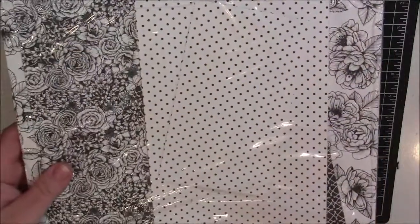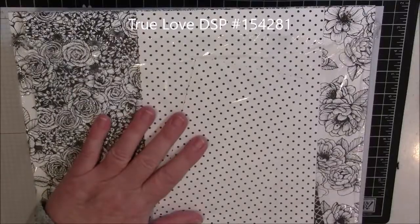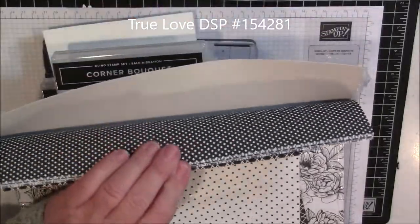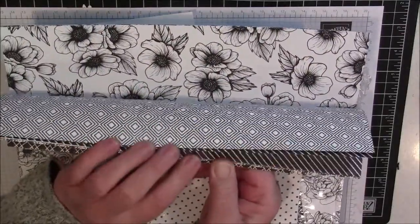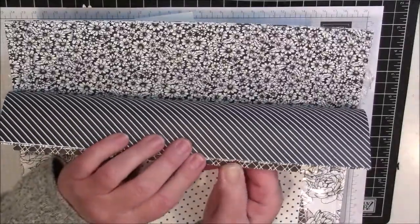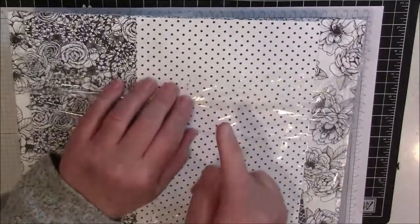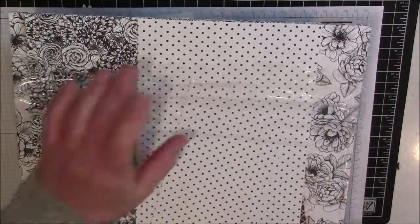Now this is the True Love Designer Series paper. It's all black and white and you guys know I love black and white. So you have all different patterns, not only the florals on the one side but then patterns on the back side. I've chosen this polka dot pattern today to use.